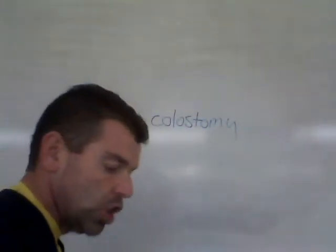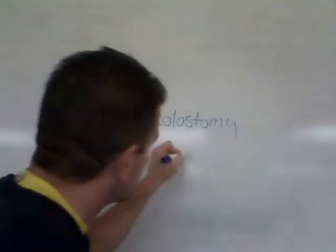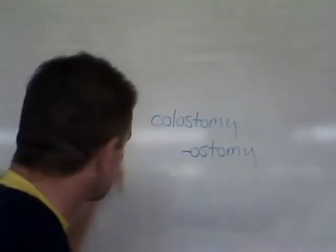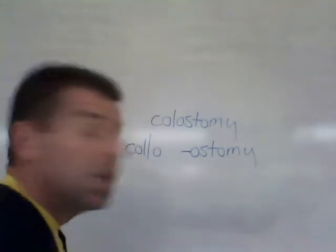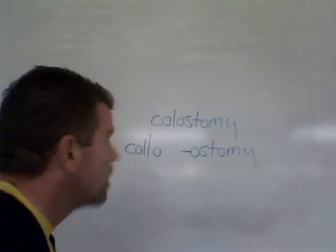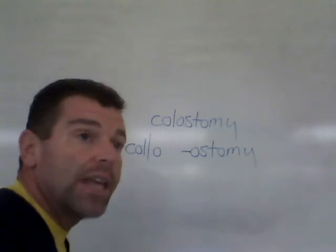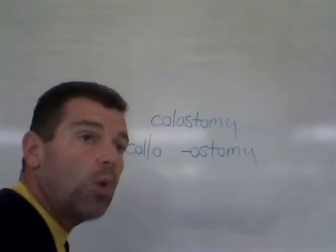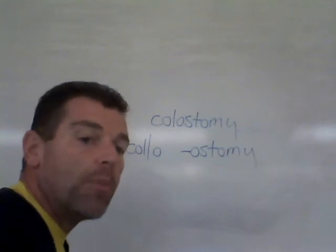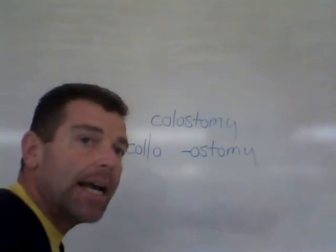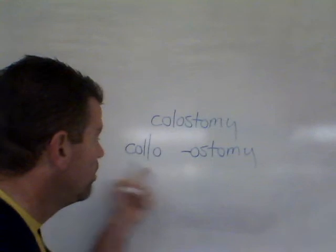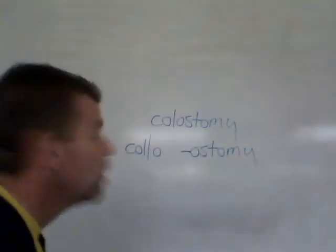Let's take a term and go the opposite direction — let's deconstruct a term. 'Ostomy' is a suffix that means to make an opening. 'Colo' is a combining form that means colon, the last part of your intestines. So a colostomy would be to make an opening in the colon. People with colon cancer may have an opening made in their colon leading to the outside where a small bag is attached, allowing fecal material to move into that bag rather than being stored in the rectum.